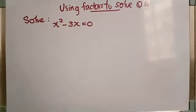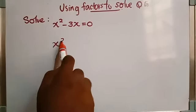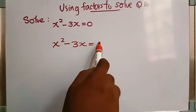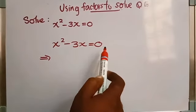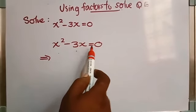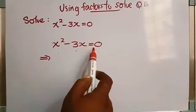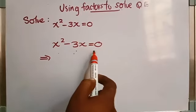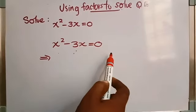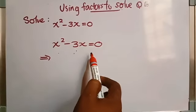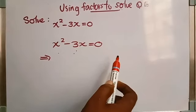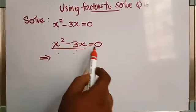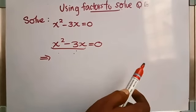To solve this quadratic equation, look at this question. If there were three terms, we could use the method of splitting the middle term — first term, middle term, last term. If there were a difference of two squares, we could use a squared minus b squared equals a plus b into a minus b. But here the question is x squared minus 3x. It is not in any of those formats.